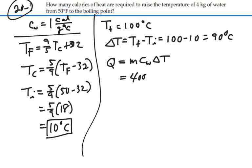This will be 4000 grams for 4 kilograms times 1 calorie per gram per degree Celsius times 90 degrees Celsius. And this will give us 3.6 times 10 to the 5 calories.